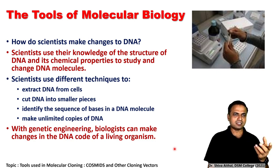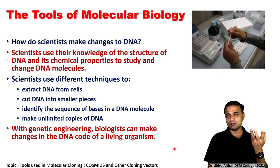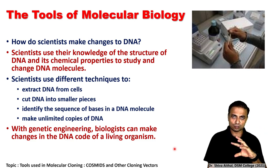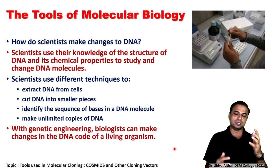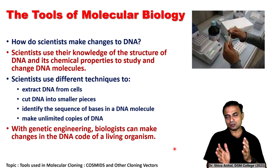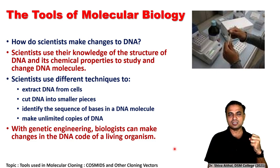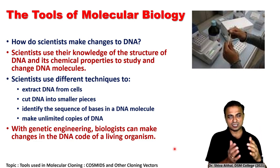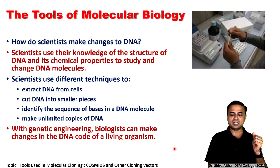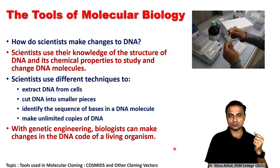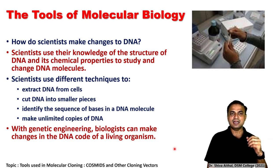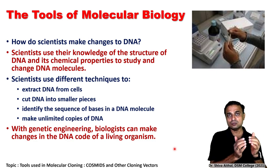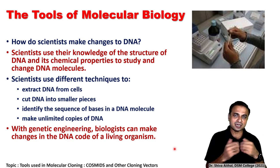So we start with the question: how do scientists make changes in DNA? Scientists use their knowledge of the structure of DNA, the chemistry of DNA, the topology of DNA molecules, and how it changes shape and size. With that knowledge they use different techniques to extract the DNA from cells first, then cut DNA into smaller pieces — both the gene of interest as well as the vector DNA. Then they identify the sequences using gel electrophoresis; the base sequences in the DNA must be known.